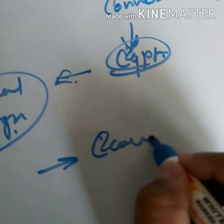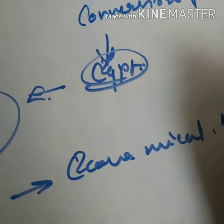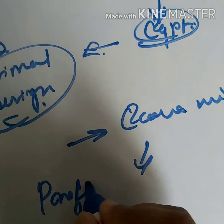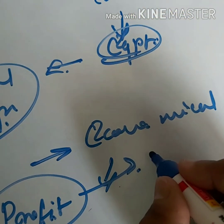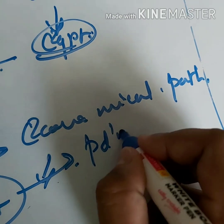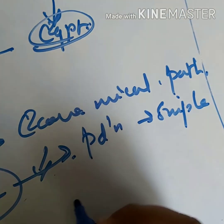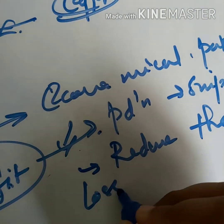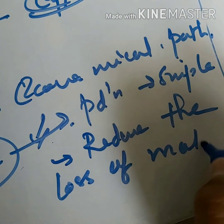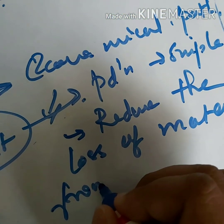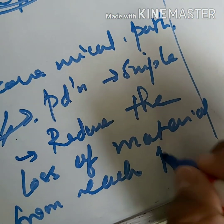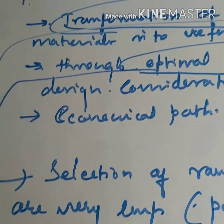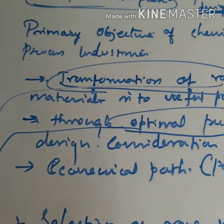The last point is the economical path or economical way. Every process industry needs profit. Profit can be achieved by making production simpler and also by reducing the loss of materials from each phase. These are the three points connected to the primary objective of chemical process industries.